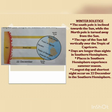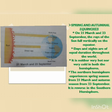The spring and autumn equinoxes occur on 21st March and 23rd September. On these days, the rays of the sun fall vertically on the equator — as you can see in the image — and both the north and south poles lie at equal distance from the sun. Days and nights are of equal duration throughout the world, and temperature is neither very hot nor very cold. The northern hemisphere experiences spring season from 21st March and autumn season from 23rd September, which is reversed in the southern hemisphere.